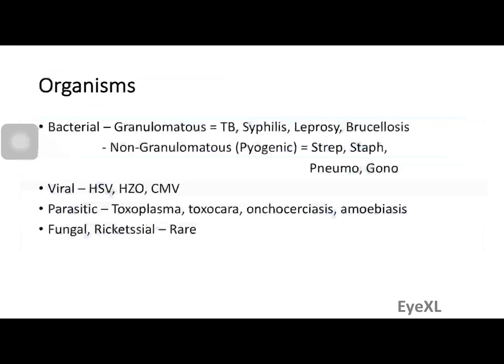The most common infective organisms are bacterial, and within bacterial there are two types: granulomatous and non-granulomatous. Classic granulomatous organisms include tuberculosis, syphilis, leprosy, and brucellosis. Non-granulomatous (pyogenic) organisms include Streptococcus, Staphylococcus, Pneumococcus, and Gonococcus. Viral causes include Herpes zoster, Herpes simplex, and Cytomegalovirus. Parasitic causes — Toxoplasma, Toxocara, Onchocerca, and Amebiasis — are rarer, and fungal and rickettsial uveitis are the least common.